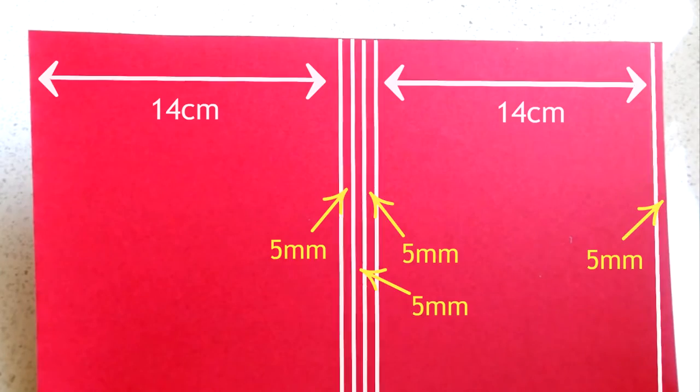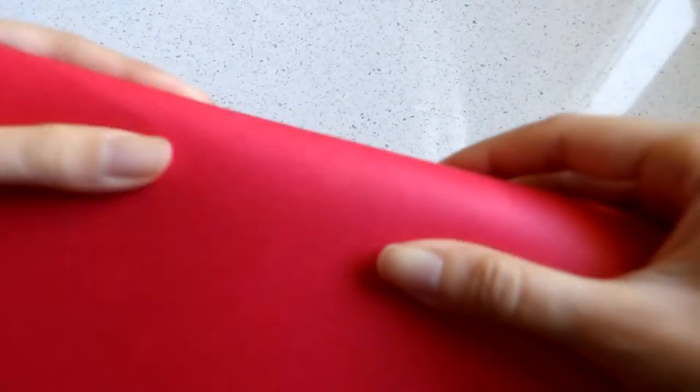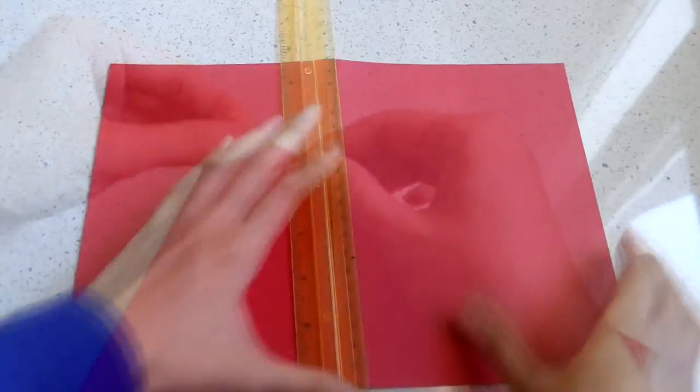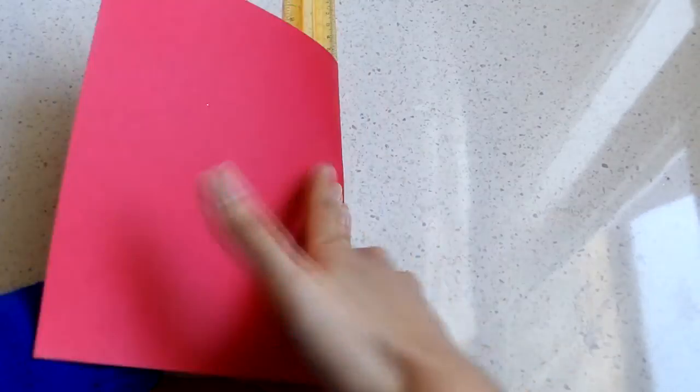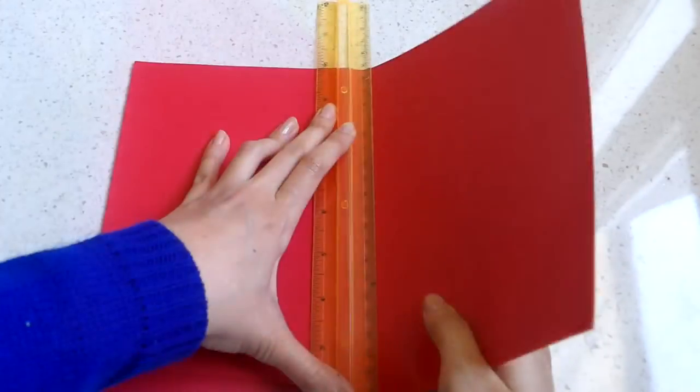With the help of a pencil divide the paper like so. Then fold along the lines in the center of the paper. I figured out it was easier folding the paper with the help of a ruler.